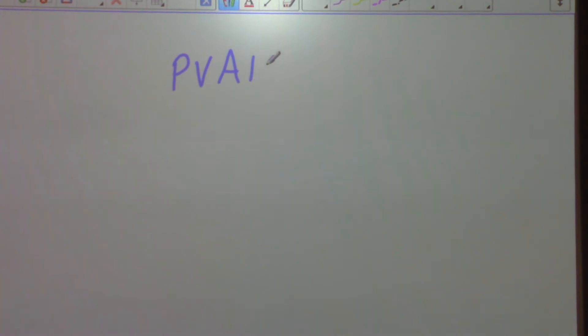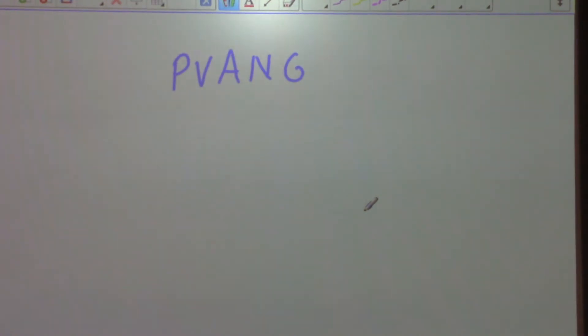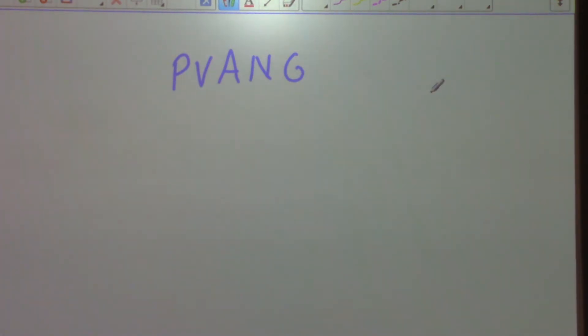We're going to talk today about something I mentioned at the beginning — it's called P-VANG. Who knows, or thinks, what P-VANG is? What P-VANG represents is the letters of representations that we use in mathematics, and particularly we sort of bring them all together in calculus.